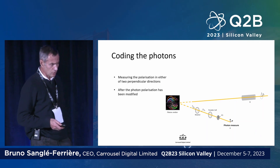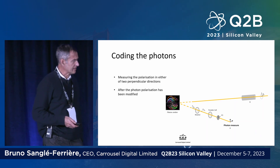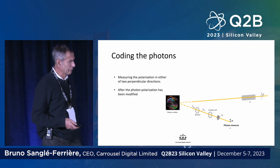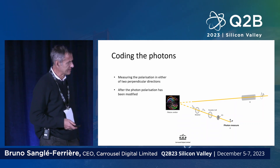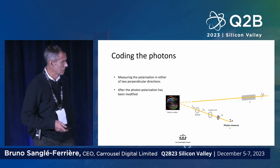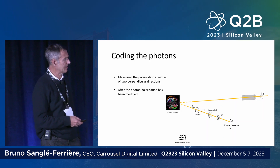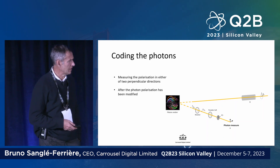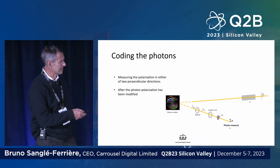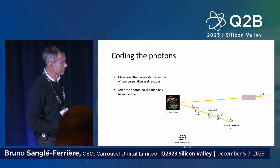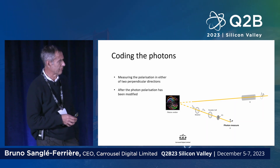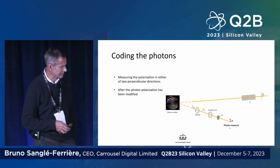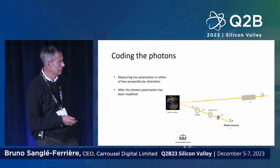To do that, we get the photon to go through linear optics devices. We first rotate the photon, then we go through Pockels cells. For instance, the photon comes in with a vertical polarization, and we rotate the photon with the rotator according to the angle we want.